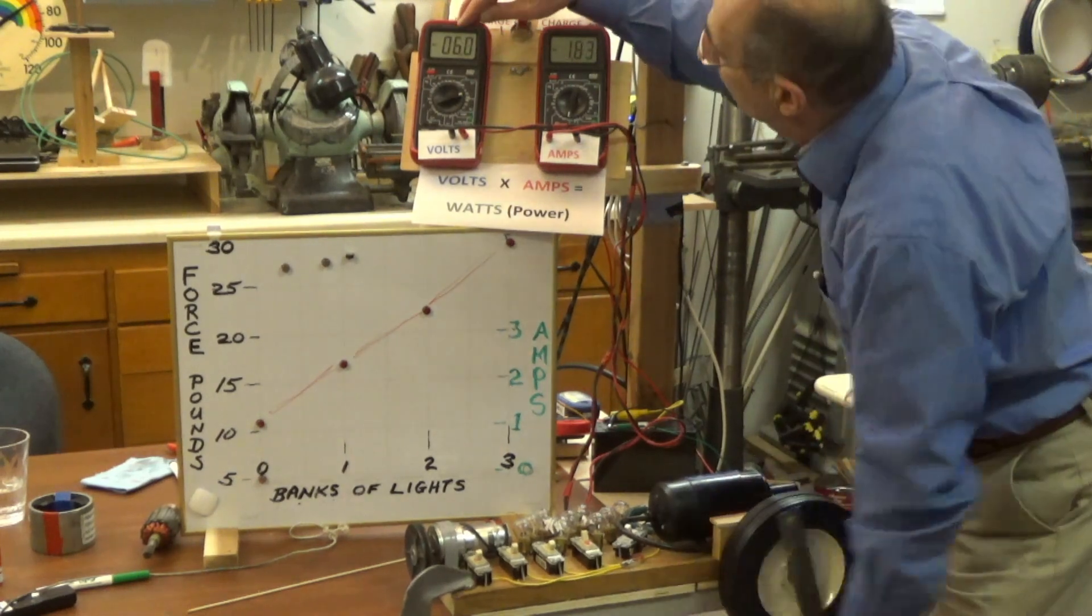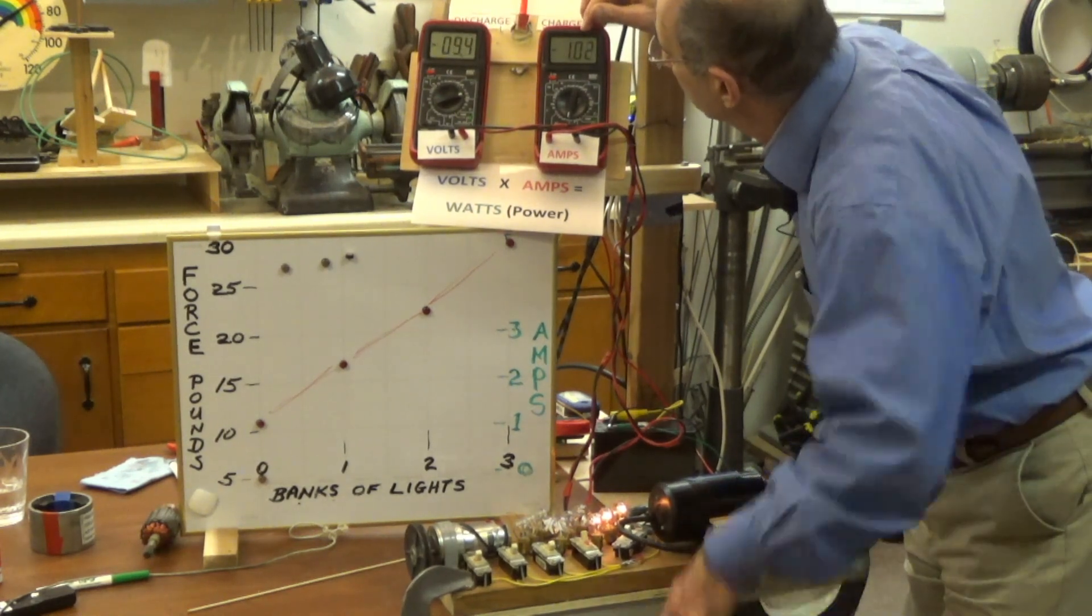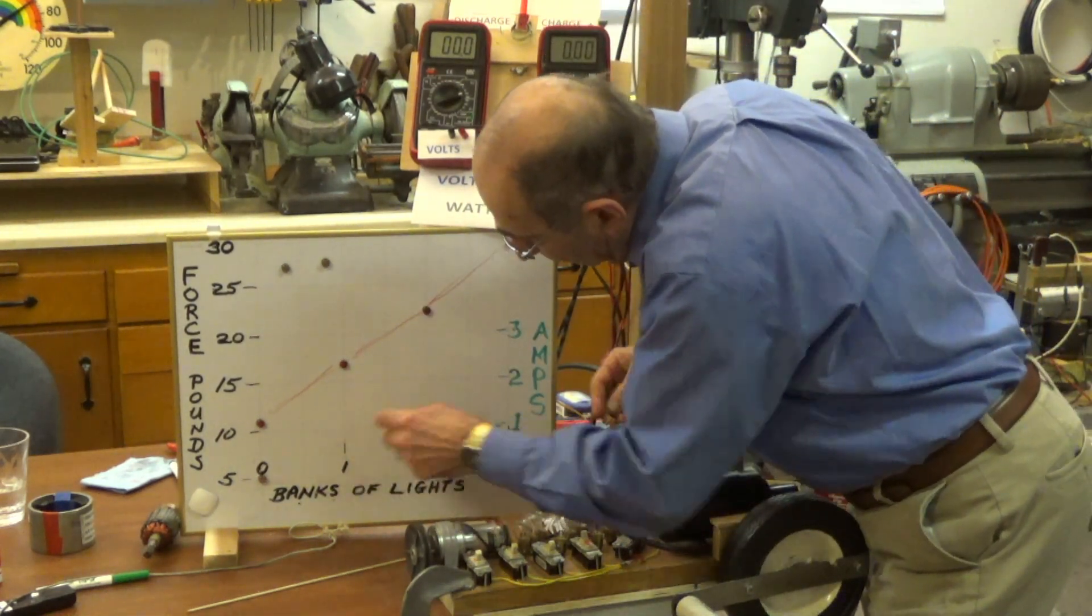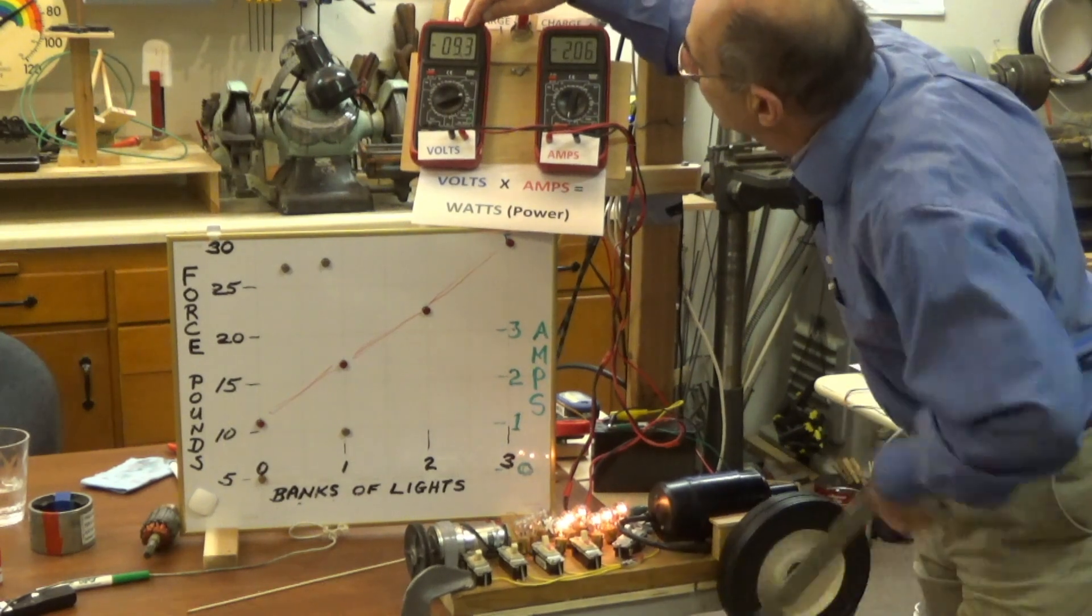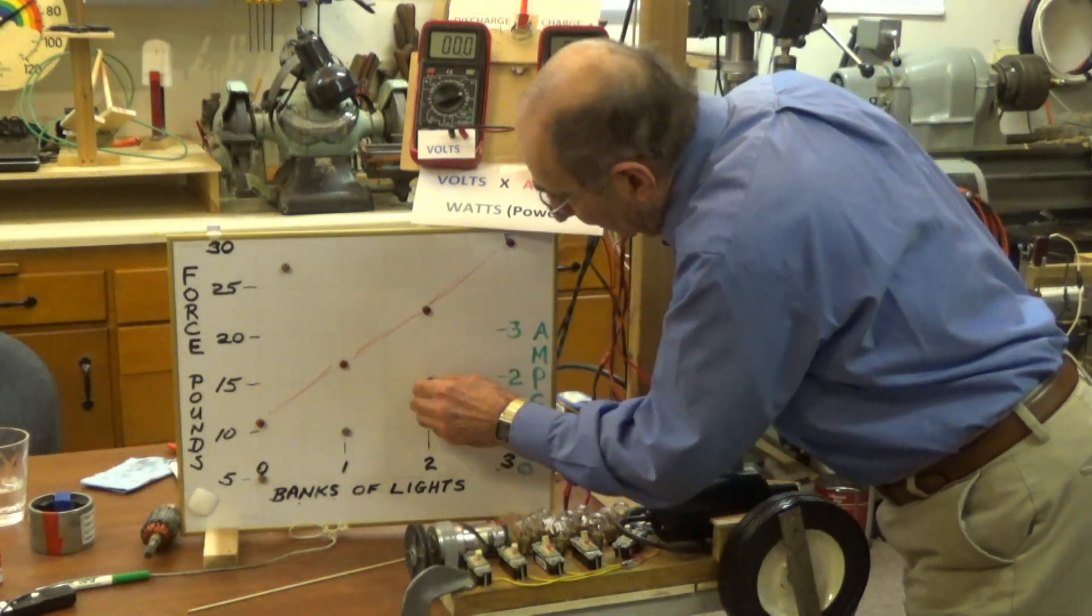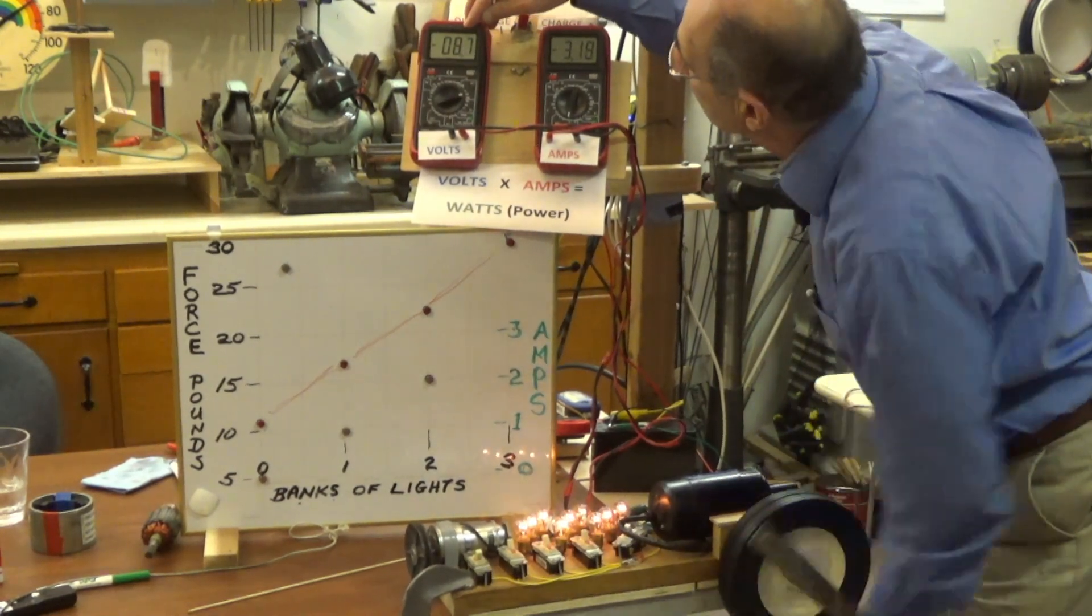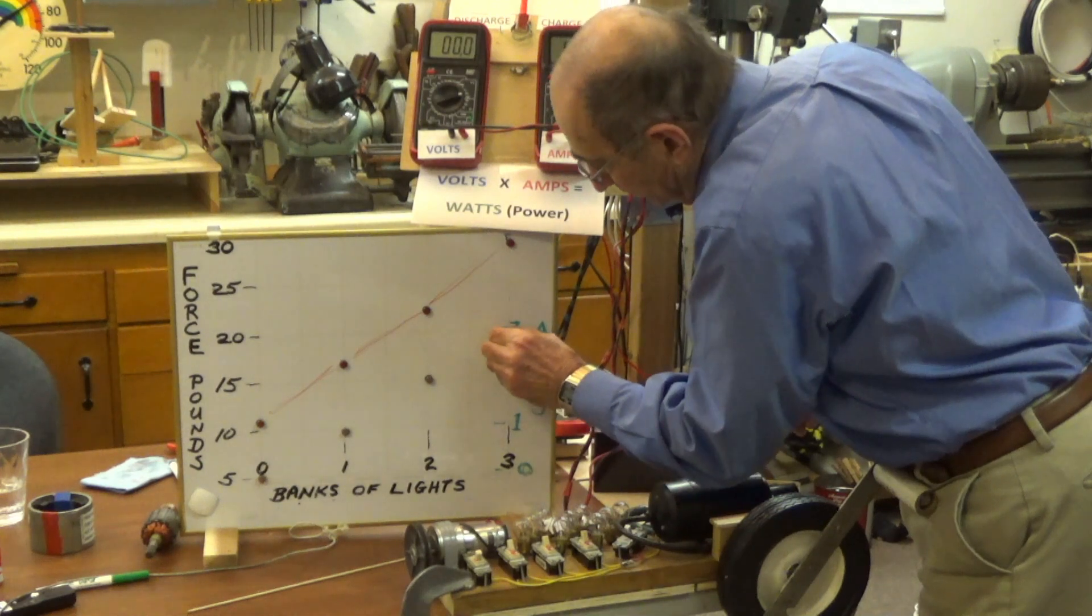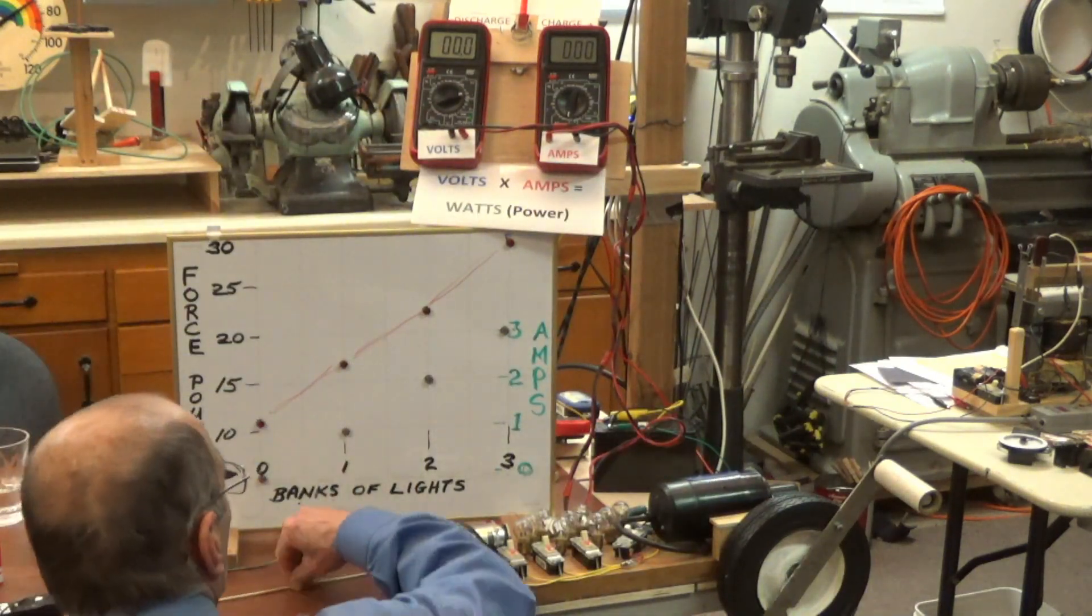Now let's turn the first bank of lights on, go up to 9.5 to 10 volts. We have one amp. One amp with one bank of lights on. Turn on two banks, get up to about 10 volts, two amps. And finally, three banks of lights, get it up to 10 volts, three amps.